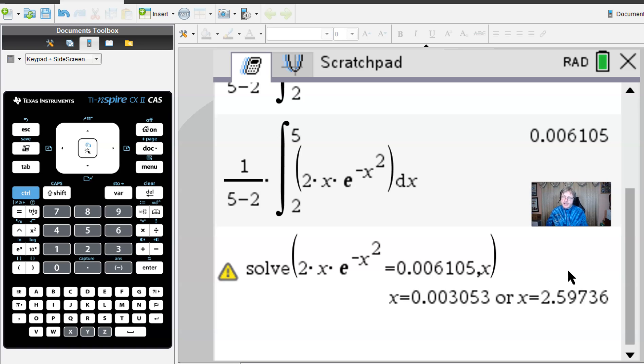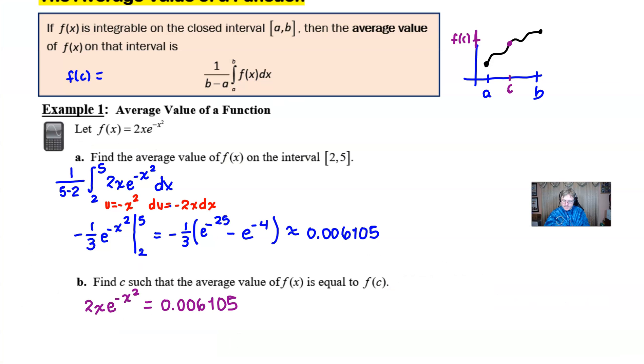I'm going to move my face out of the way. We do have two results here, 0.003 and 2.597. Whatever we use as our answers, we have to make sure that they fall within the boundaries of our given A and B, which is from 2 to 5. So because of that, this guy here is going to get kicked to the curb and we'll only use 2.597. We're going to solve and we notice that the answer was approximately 2.597 or 2.598.